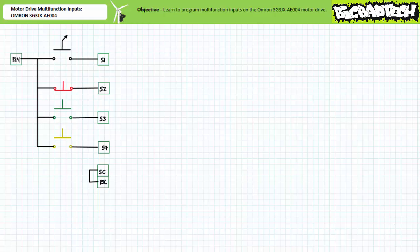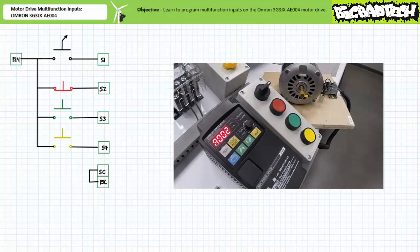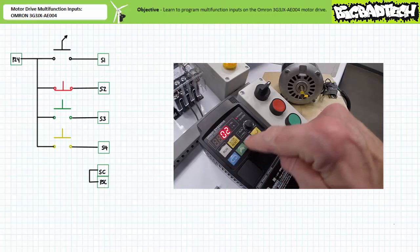The far more appropriate way to program this drive is to first assign the desired function to the appropriate inputs, then hand off operation from the digital operator group to the multifunction input terminals. This way the drive executes the desired functions right out of the gate and we're less likely to get a valuable portion of our anatomy ripped off should this motor unexpectedly spring to life. Let's go about this in the proper manner. Ensure extended function parameter A002, run command selection, is in the default state of 02 — direct operation via the run and stop/reset button in the digital operator group.